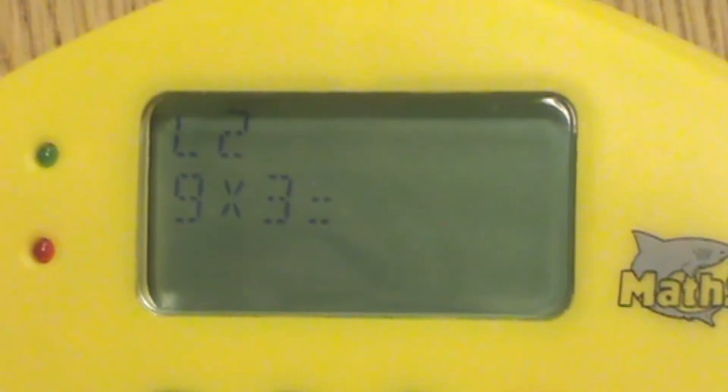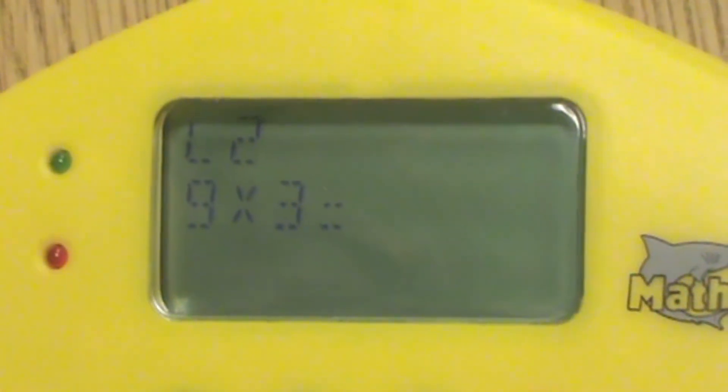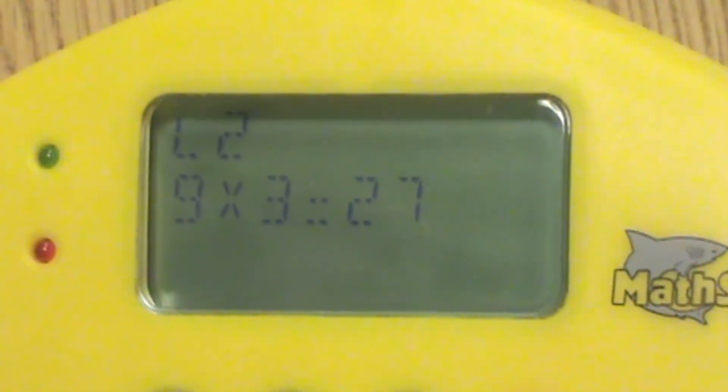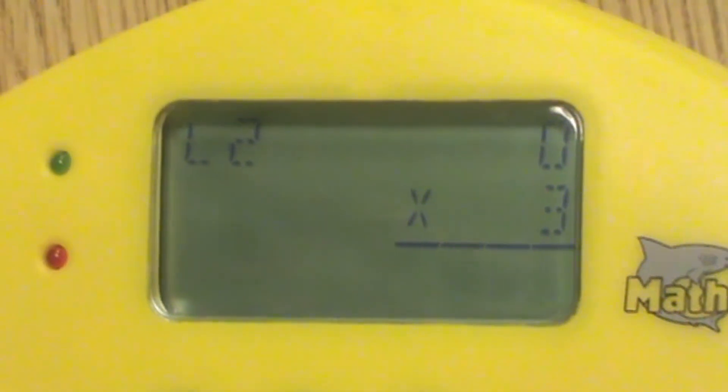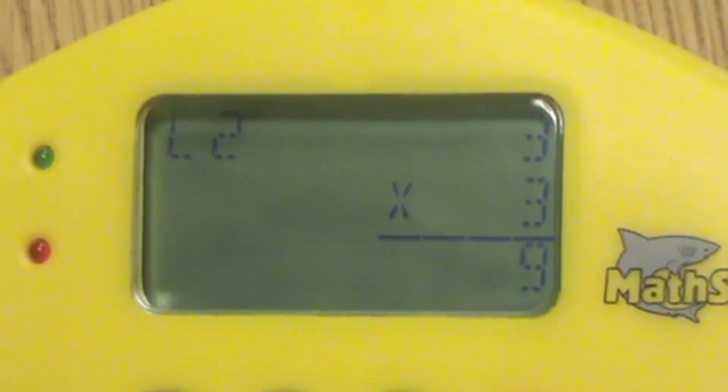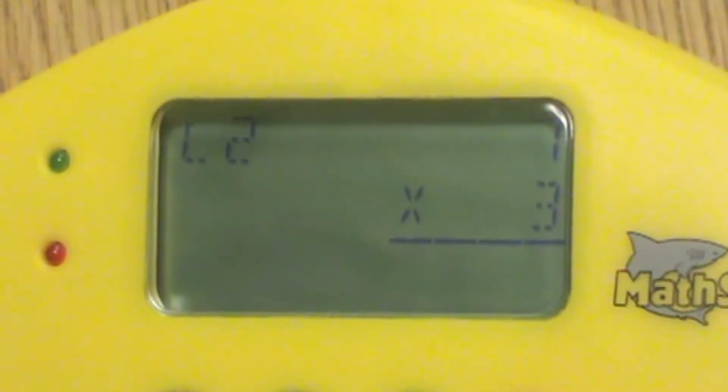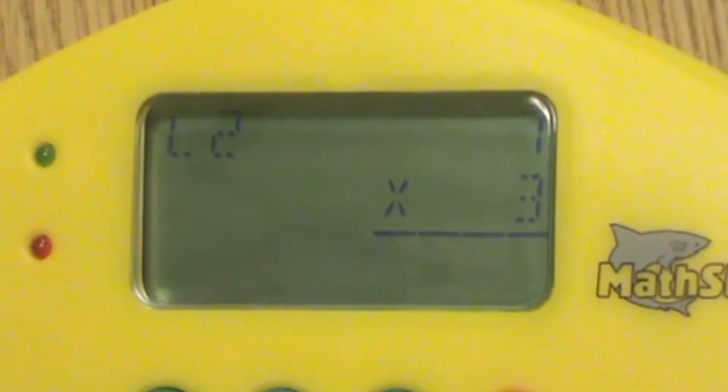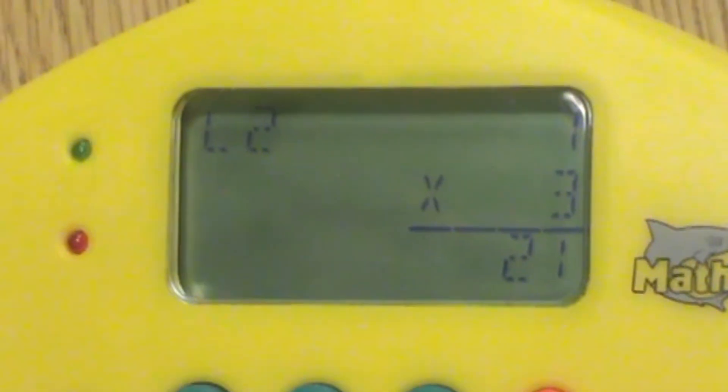There's the correct answer flashing, and we'll see that problem again. There's the 7 times 3 again. We'll enter the correct answer this time.